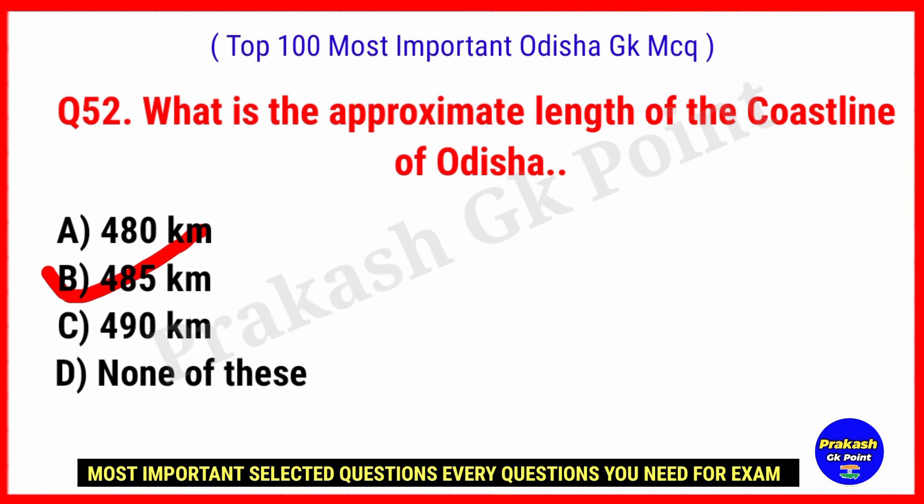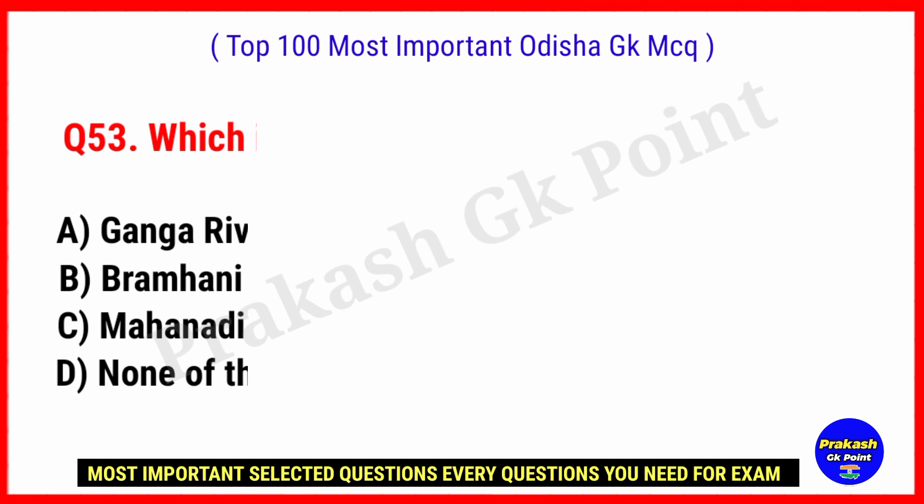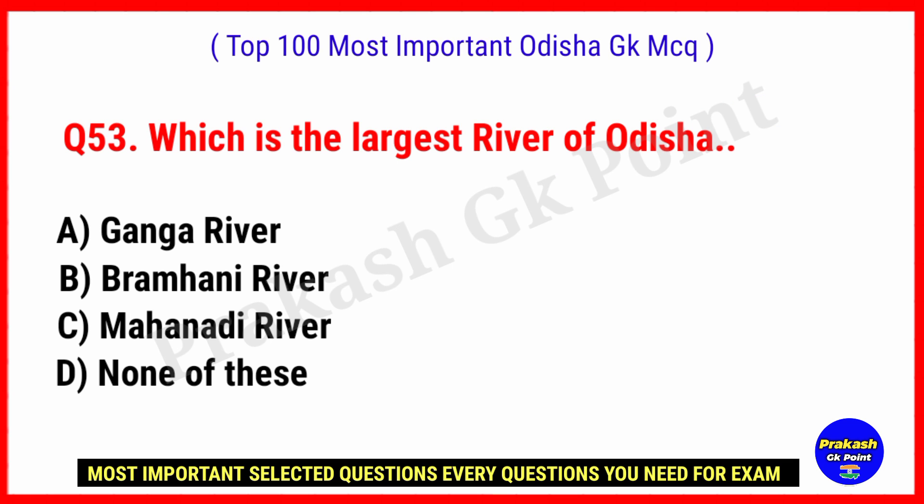What is the approximate length of the coastline of Odisha? Answer: Option B, 485 kilometers. Which is the largest river of Odisha? Answer: Option C, Mahanadi River.